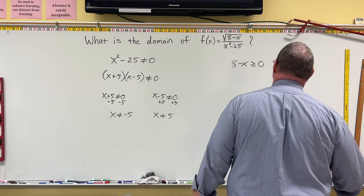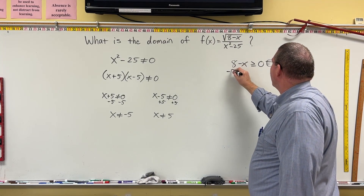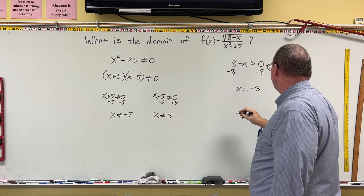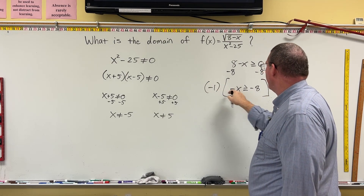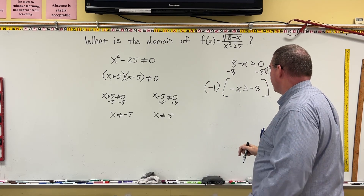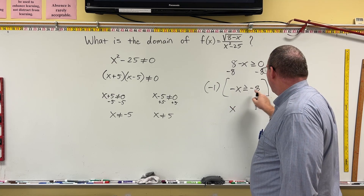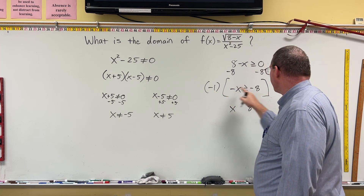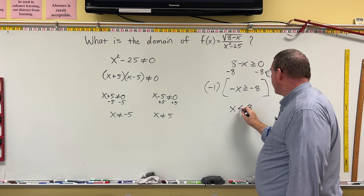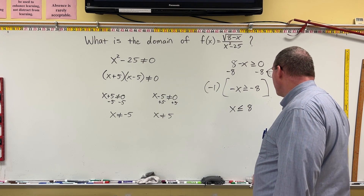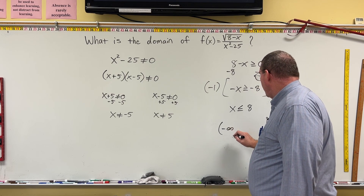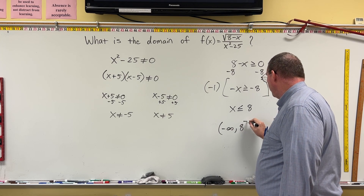Now let's find the domain restriction for the square root. We subtract 8 from both sides of 8 minus x ≥ 0 to get negative x ≥ negative 8. Multiplying the whole thing by negative 1 — reversing the inequality symbol — gives x ≤ 8. This gives us the domain negative infinity up to 8, with a bracket.